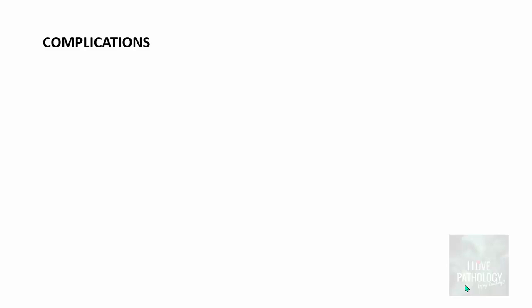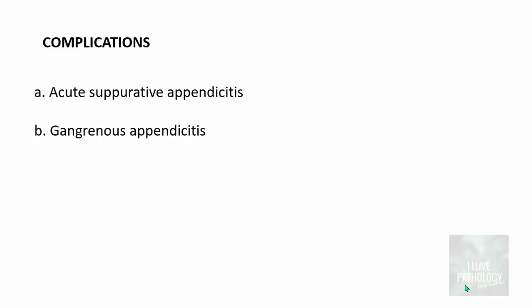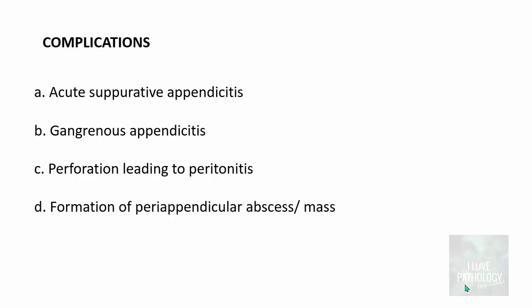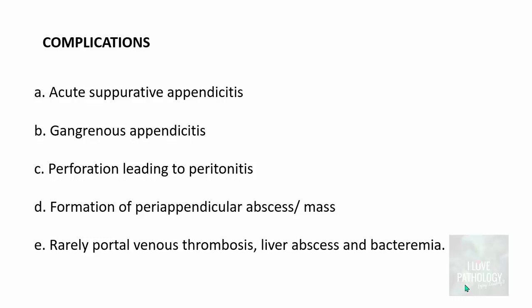Complications of untreated appendicitis include acute suppurative appendicitis, where extensive abscess collects within the lumen or the entire wall is acutely inflamed with abundant neutrophils. Severely compromised blood supply results in gangrenous appendicitis, which may lead to perforation, and once perforated, inflammation extends into the peritoneum causing peritonitis. Other complications include peri-appendicular abscess, appendicular mass, and rare complications such as portal venous thrombosis, liver abscess, and bacteremia.